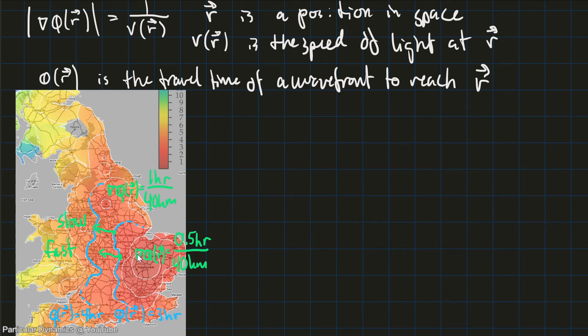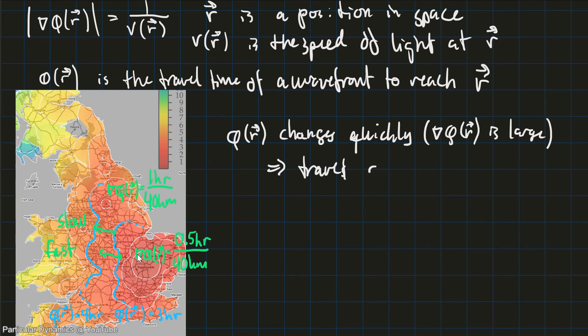And to summarize what we're observing here is that when the travel time function phi of r, when it changes quickly, in other words, when the contours here are tight together, like in the first example, said in another way, when the gradient of the travel time is large, then we observe that we are traveling slow. So we say travel speed is slow.